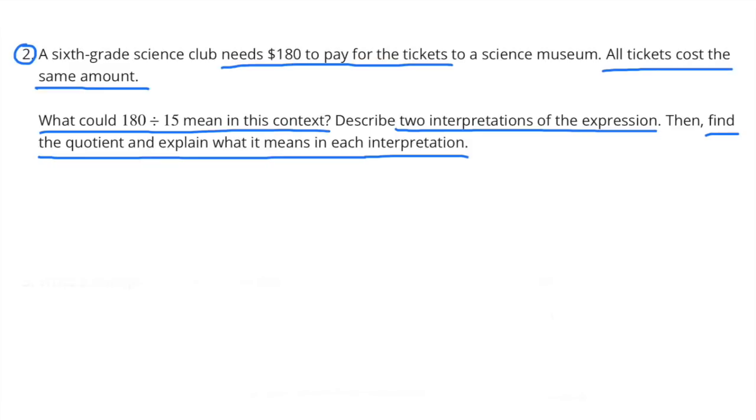Number 2. A 6th grade science club needs $180 to pay for the tickets to a science museum. All tickets cost the same amount. What could 180 divided by 15 mean in this context? Describe two interpretations of the expression, then find the quotient and explain what it means in each interpretation.